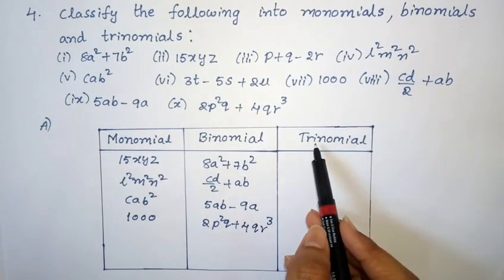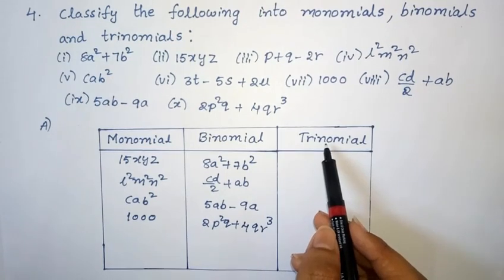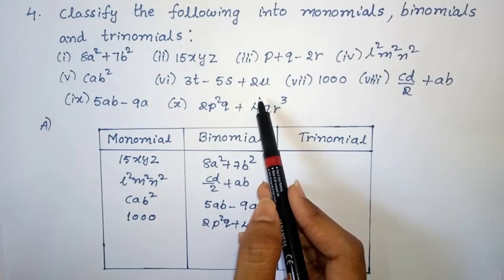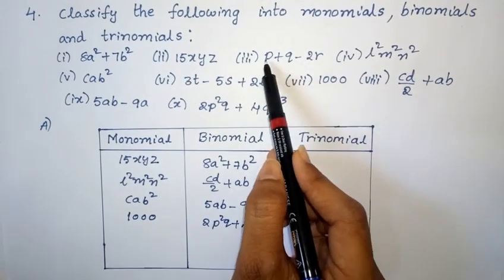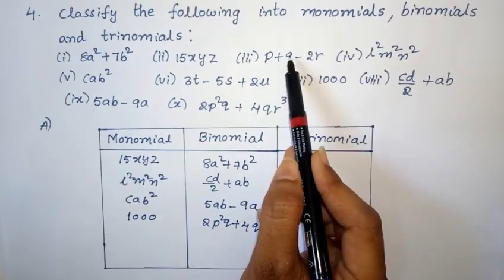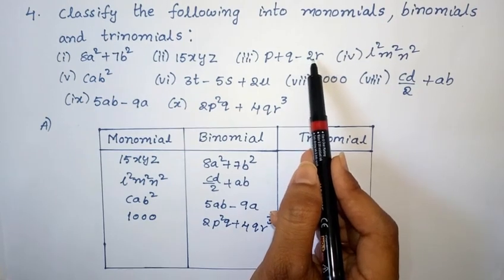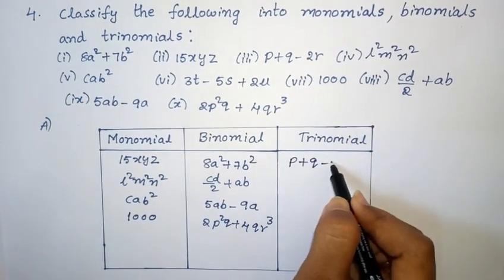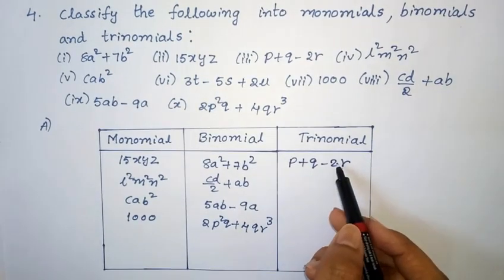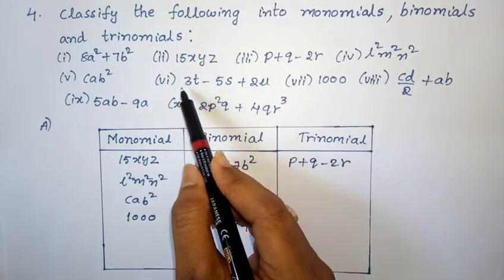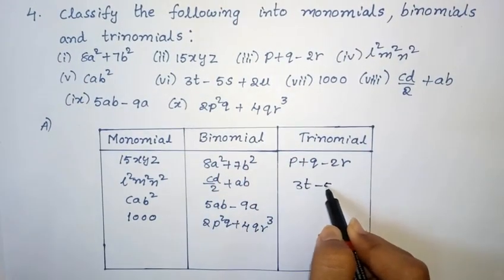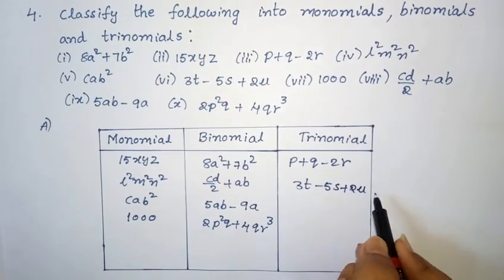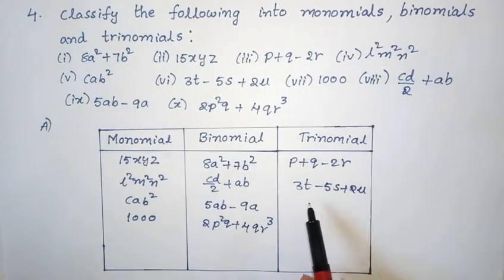Next, the third column belongs to trinomial — trinomial means three terms. Among the expressions: p plus q minus 2r has three terms — p is the first, q is the second, minus 2r is the third — trinomial. Also 3t minus 5s plus 2u has three terms — trinomial. So all ten expressions are completed and classified.